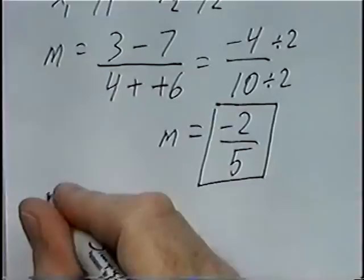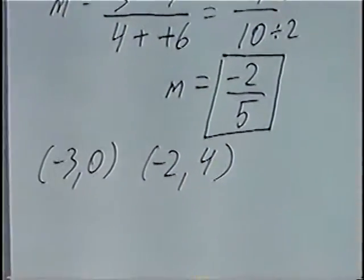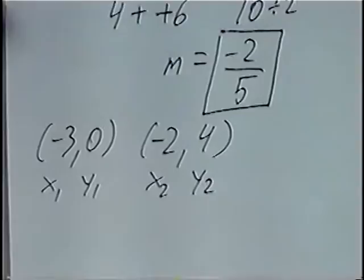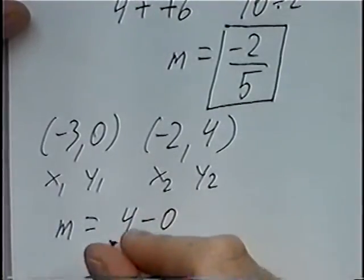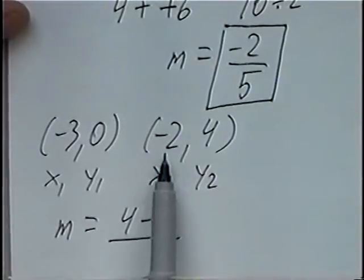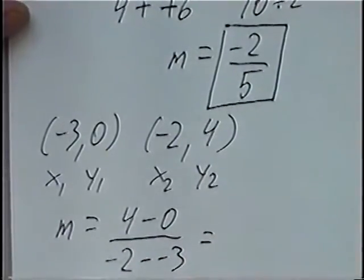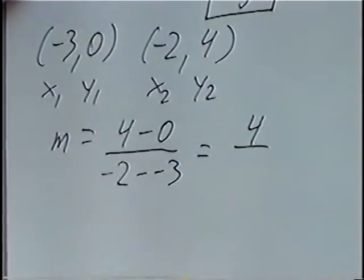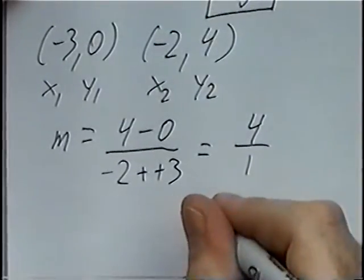The second question, last question for the section, is negative 3 comma 0 and negative 2 comma 4. Again, if you want to, you can label these X1, Y1 and X2, Y2. Solving for the slope M, we'll subtract the two Y values, which would be 4 minus 0 — the second value minus the first value. And we'll subtract the second X minus the first X, which would be negative 2 minus a negative 3. 4 minus 0 would be 4. And negative 2 minus a negative 3 — minus minus we can change to plus — so negative 2 plus 3 would be 1. So our slope would be 4 over 1, or M equals 4.